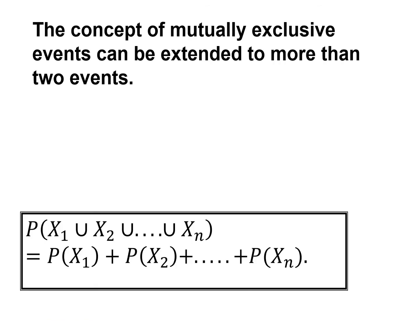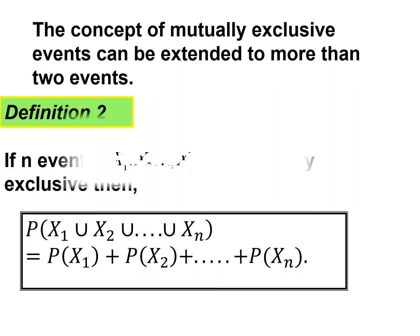The concept of mutually exclusive events can be extended to more than two events. Definition 2: If N events — X1, X2, up to Xn — are mutually exclusive, then the probability of X1 through Xn can be written as the addition: P(X1) + P(X2) + ... + P(Xn).